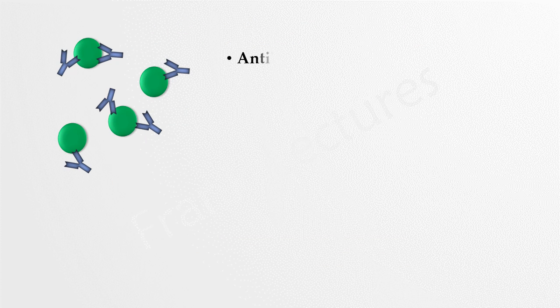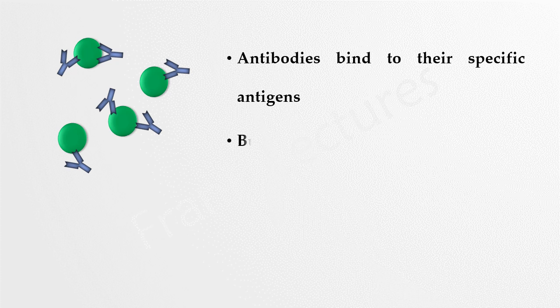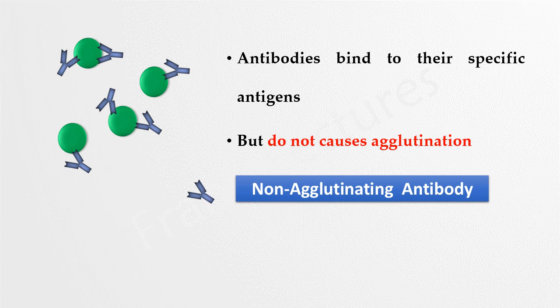There are other antibodies that do bind to their specific antigens but do not cause agglutination. Such antibodies are known as non-agglutinating antibodies. One reason for this non-agglutination is that the epitopes to which these antibodies bind are spaced at larger distances, and therefore these antibodies are not able to cross-link them. Because of this, non-agglutinating antibodies are difficult to detect in the lab.